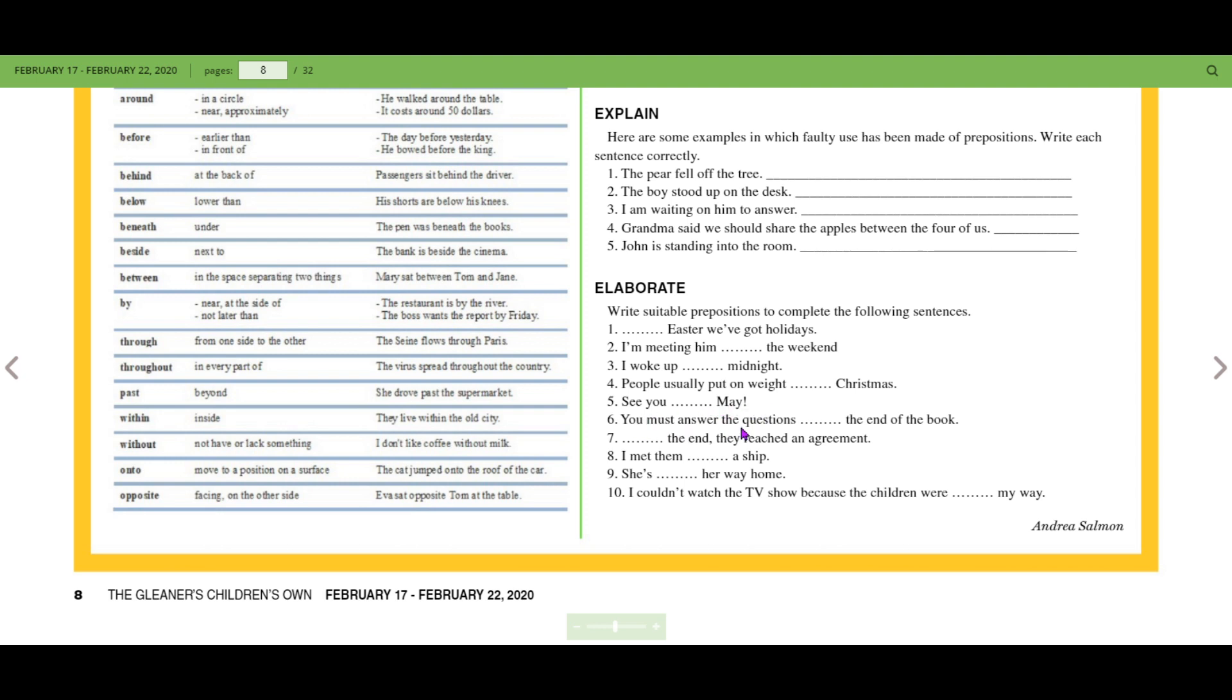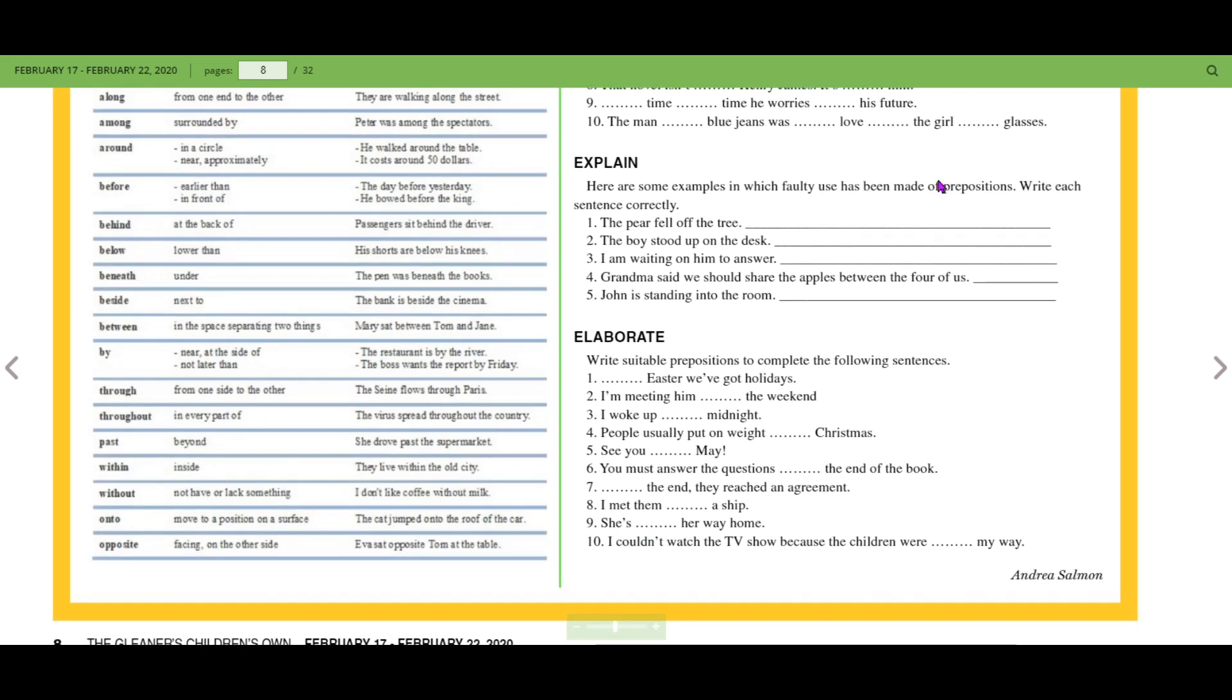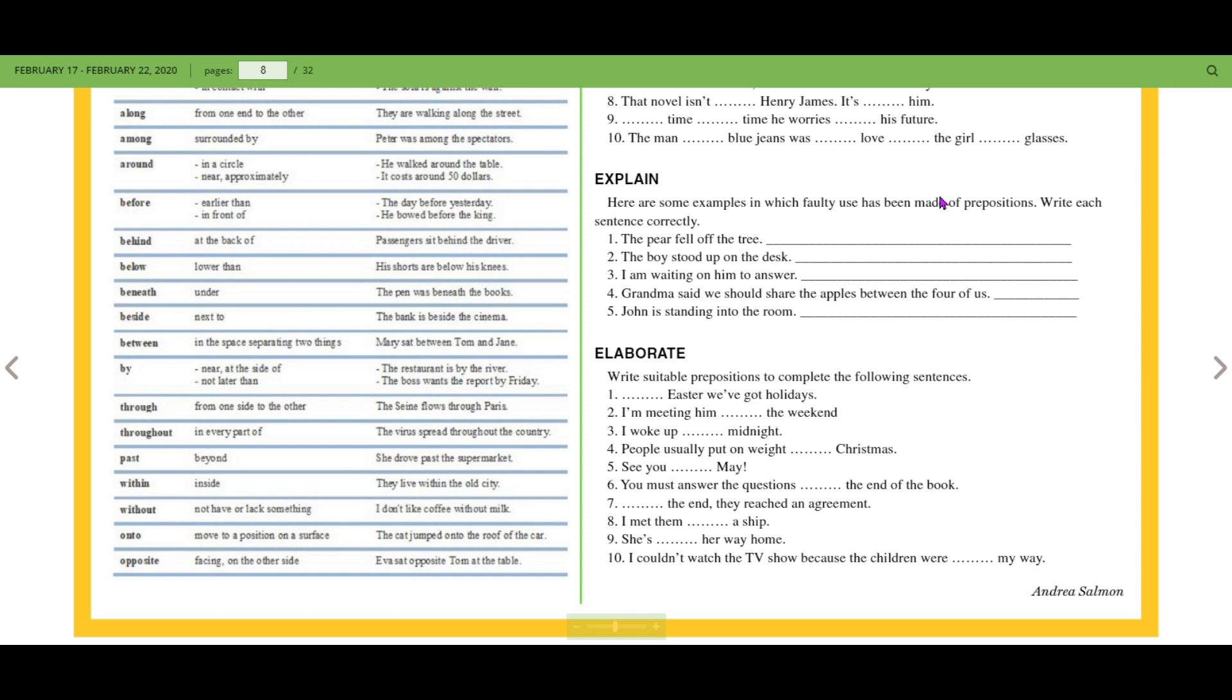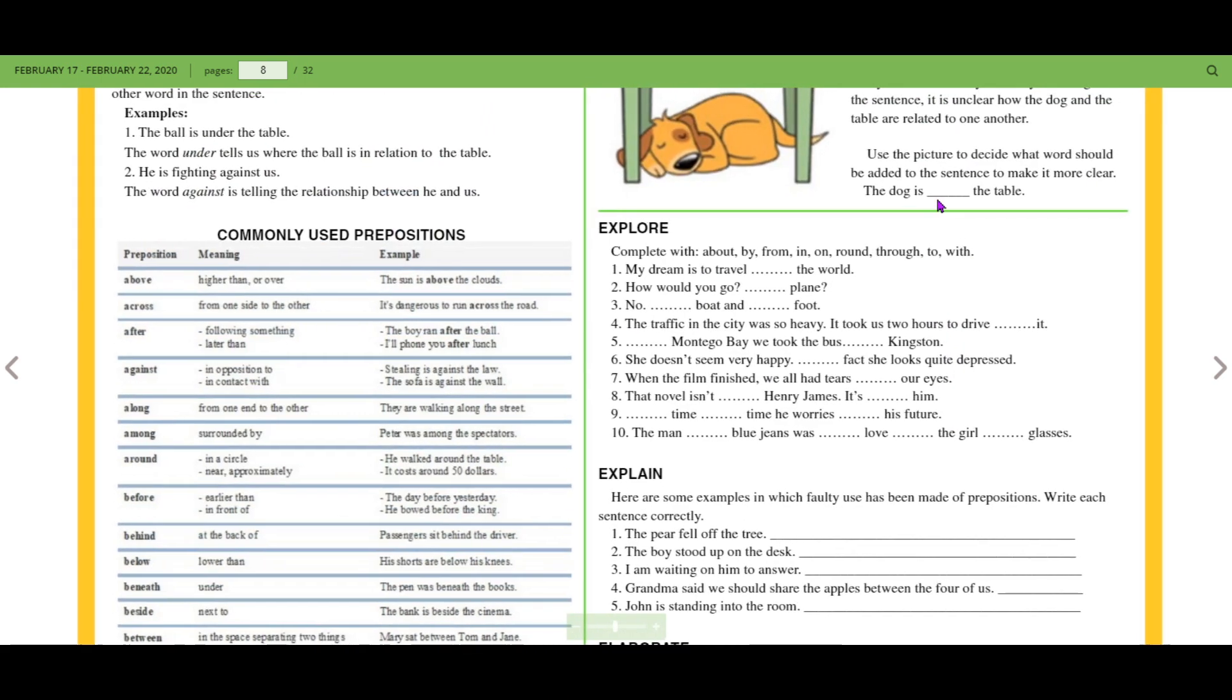You must answer the questions at the end of the book. By the end, they have reached an agreement. I met them on a ship. She's on her way home. I couldn't watch the TV show because the children were in my way. If you have any other answers, then you can put those in and we'll discuss whether they match up with the sentence grammatically.